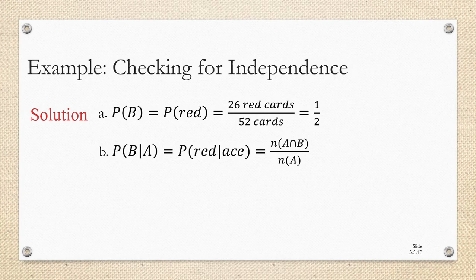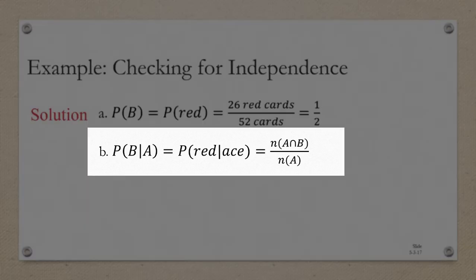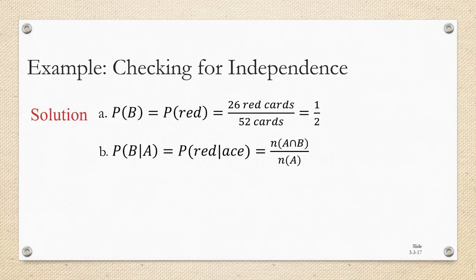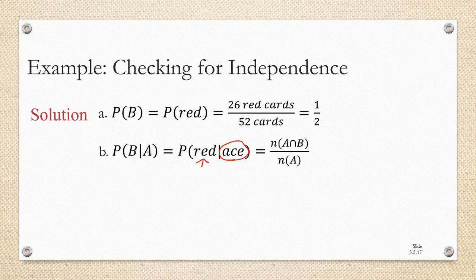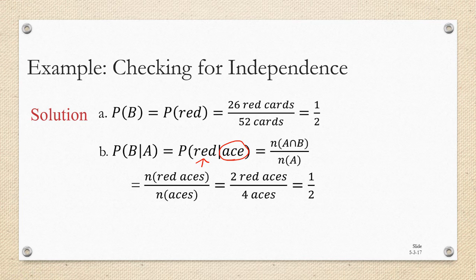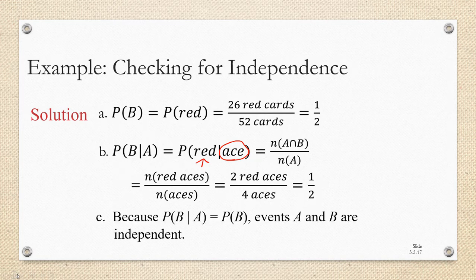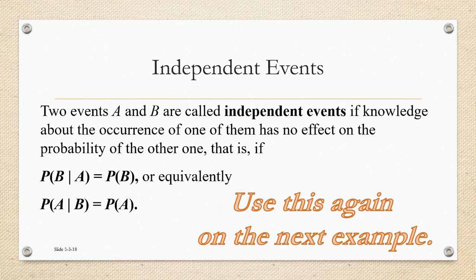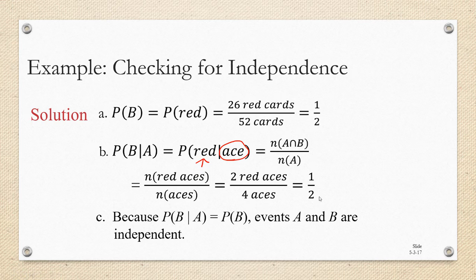The probability of B given A has occurred — there is a formula: it's the number of elements in A and B divided by the number in A. But thinking of it intuitively, we've reduced our universe of possibilities down to just A, meaning we know we've drawn an ace, so we only have four possibilities. Out of those four aces, the ace of hearts and the ace of diamonds are red — two out of four, or one half. So yes, these two events are independent because one half equals one half.